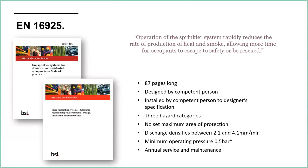EN 16925 has similar ideas: competent person, designed to designer specification, three hazard categories. There's no set maximum area of protection — that's down to the manufacturers of the sprinkler heads. Discharge density is between 2.1 and 4.1 mm per minute, and minimum operating pressure is half a bar, again largely down to the manufacturer's instructions. Annual service and maintenance is also required.